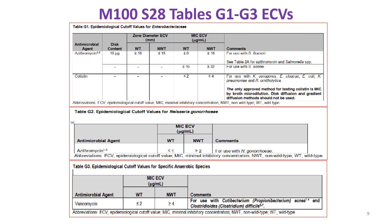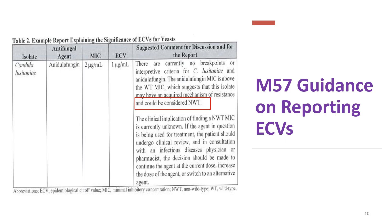For example, azithromycin: using a frequency distribution graph, the ECOFF value for wild type is ≤8, and for non-wild type it is ≥16. So if the MIC were 4, it would be interpreted as wild type — no resistance mechanism. If the MIC were 16 or 32, it would be non-wild type — with a resistance mechanism. ECOFF only tells us whether a given MIC represents wild type or non-wild type.